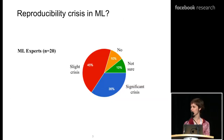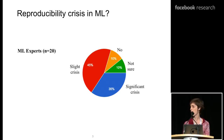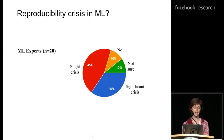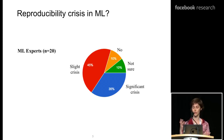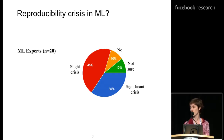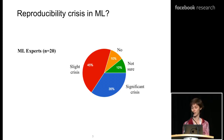I was curious to see how that might extend to machine learning. Back in December, I was at a workshop and asked colleagues to play along the same game, asking whether they thought there was a reproducibility crisis specifically in machine learning. About 80% of them thought there was either a slight or significant crisis. So in my mind, there's definitely reason for us to be thinking about this, talking about it, and taking action to see how we can do better.